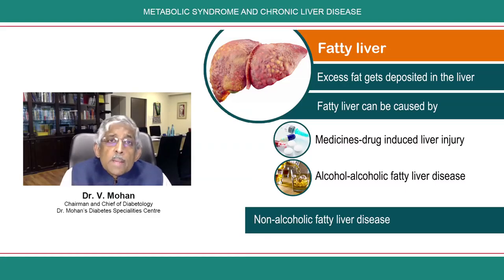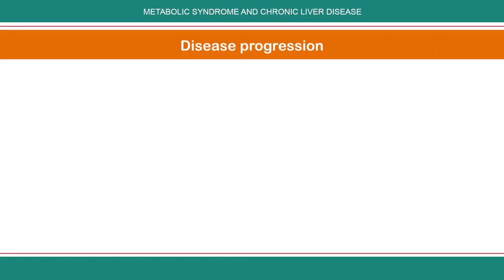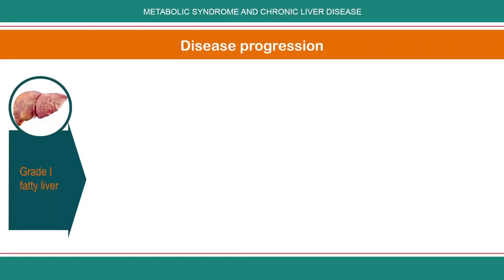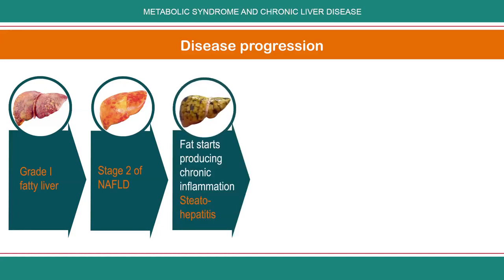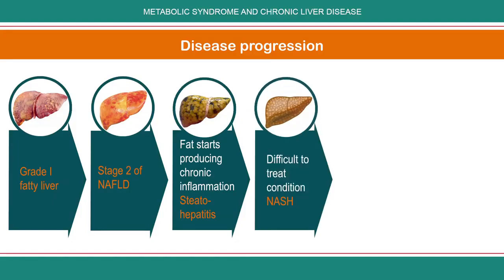Why are we so worried about fatty liver? It can start with just a little fat — grade one fatty liver — then progress to stage two and stage three of NAFLD. Up to that stage it is only fat in the liver, which we call steatosis. In the next stage, that fat does not remain inert but starts producing chronic inflammation, which is called steatohepatitis. At that point, we no longer call it NAFLD; we call it non-alcoholic steatohepatitis, or NASH.